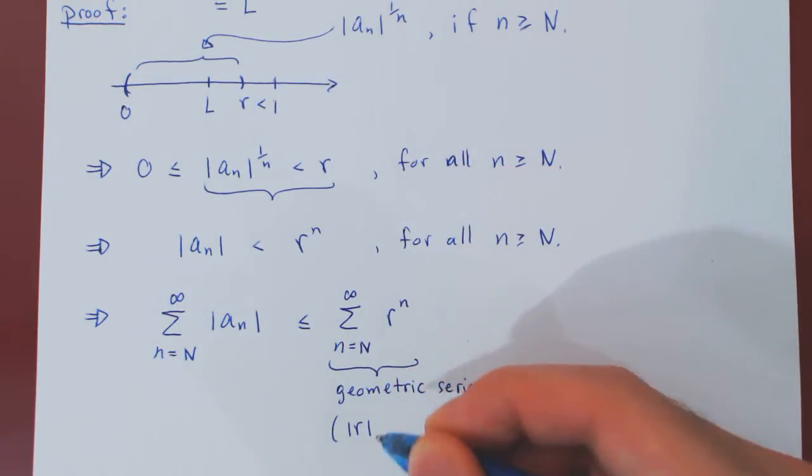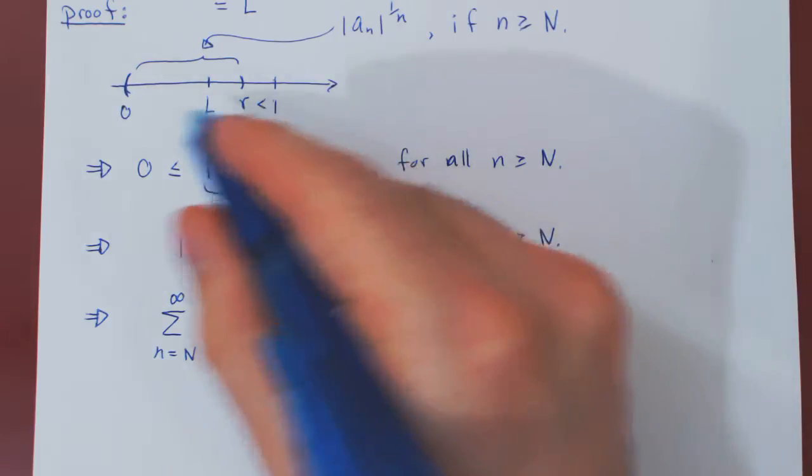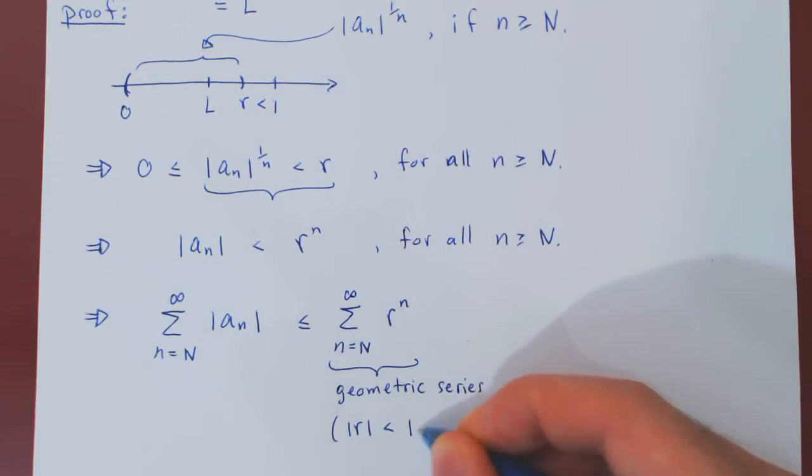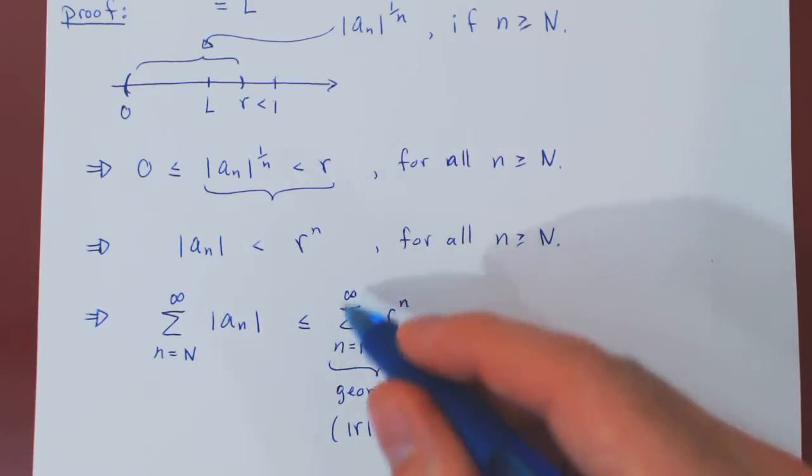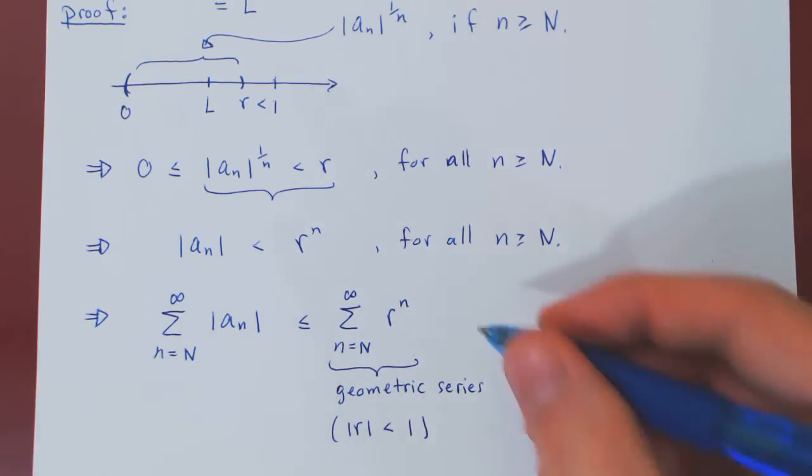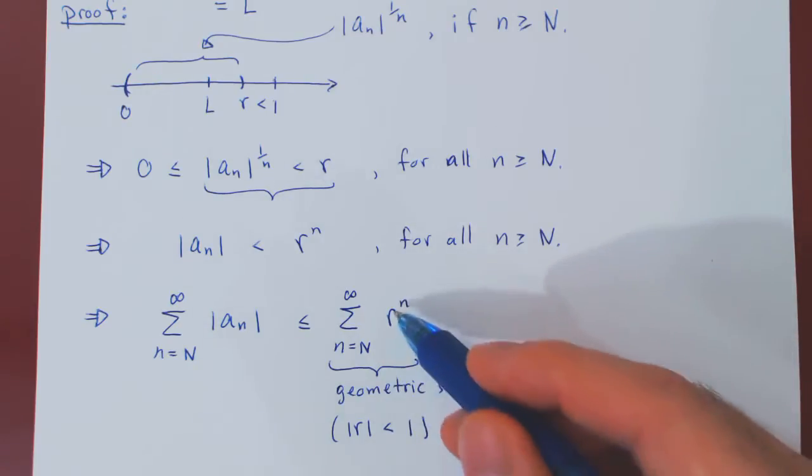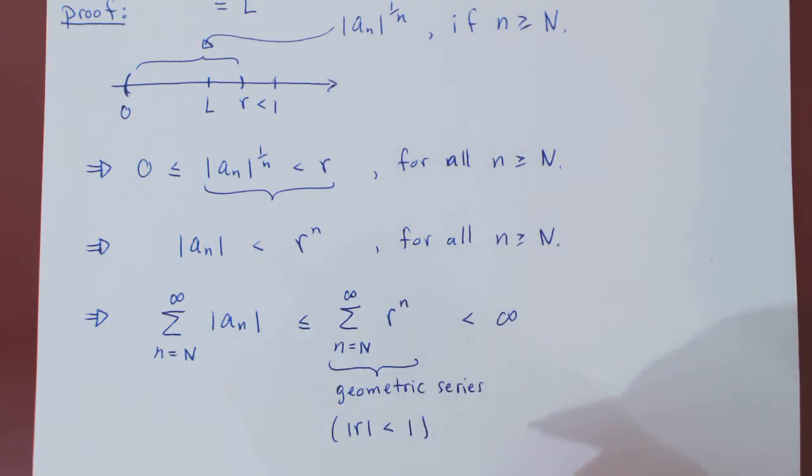Clearly, in absolute value, R equals R, as it's already non-negative, and it is strictly less than 1. So this is a converging geometric series, so this is nothing but a real number, therefore, is less than infinity.